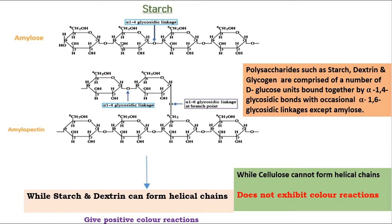Starch has two components: amylose and amylopectin. Amylopectin has a straight chain with alpha 1,4 glycosidic bonds, while there are also alpha 1,6 glycosidic links forming branched chains.